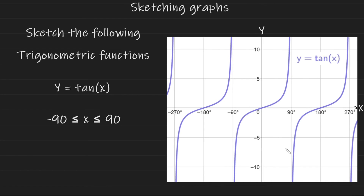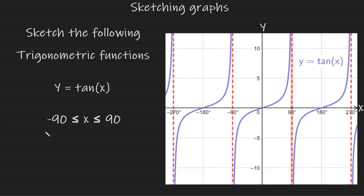The boundaries given for the tan graph are most likely going to be from minus 90° to 90°, but they can also range from 0° to 360° or into the negative degrees. The graph will not touch 270° or negative 270° either — those are also asymptotes. Commit to memorizing the tan graph and all of its key features so you can sketch it easily when asked.